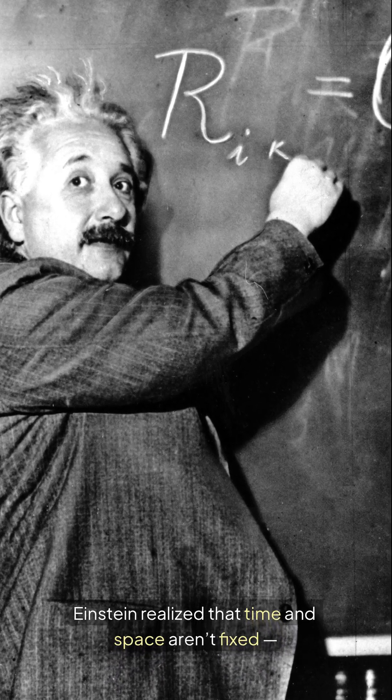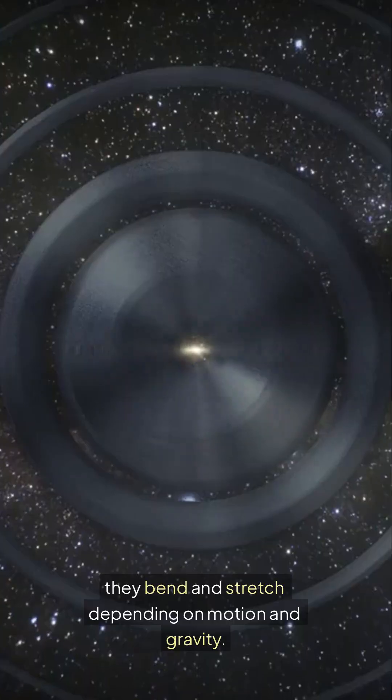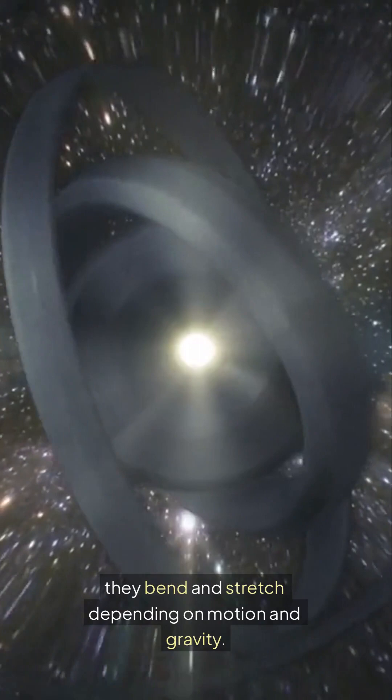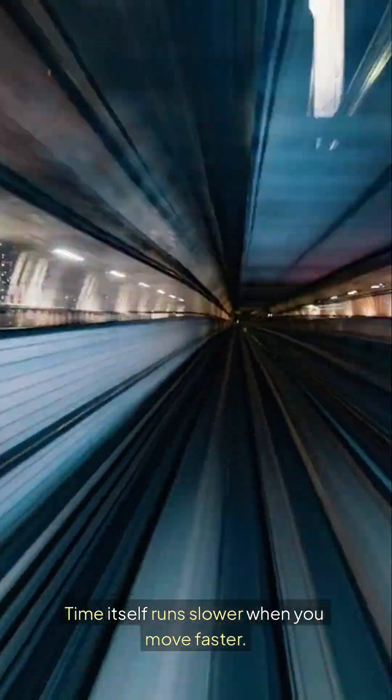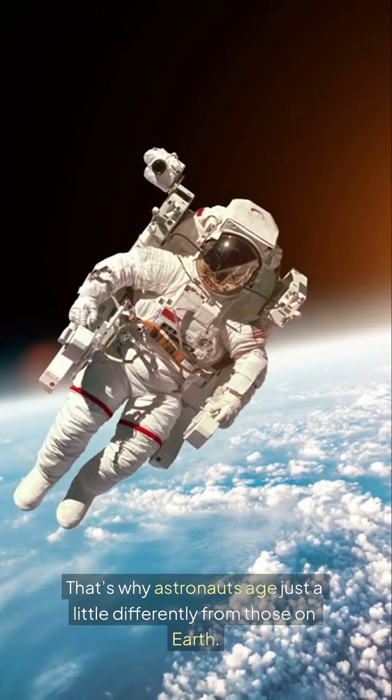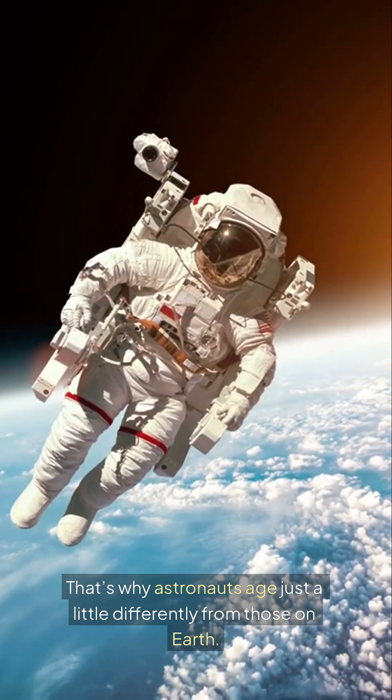Einstein realized that time and space aren't fixed, they bend and stretch depending on motion and gravity. Time itself runs slower when you move faster. That's why astronauts age just a little differently from those on Earth.